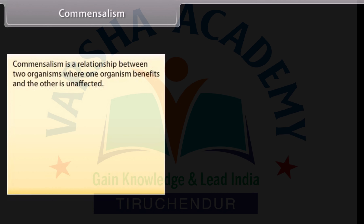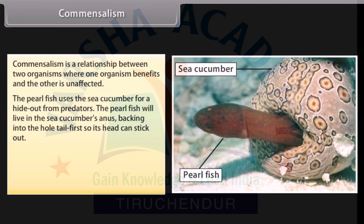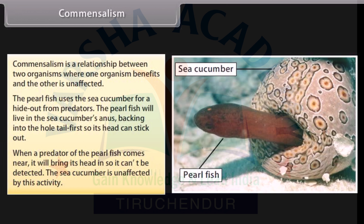Commensalism is a relationship between two organisms where one organism benefits and the other is unaffected. For example, the pearlfish uses the sea cucumber as a hideout from predators. The pearlfish will live in the sea cucumber's anus, backing in tail first so its head can stick out. When a predator of the pearlfish comes near, it will bring its head in so it cannot be detected. The sea cucumber is unaffected by this activity.